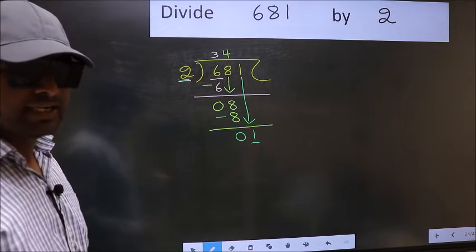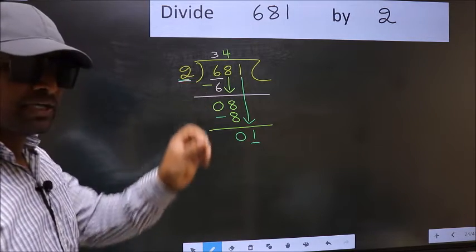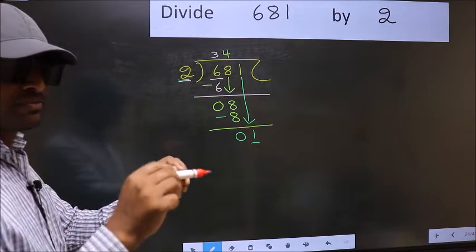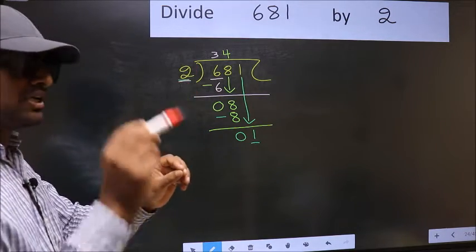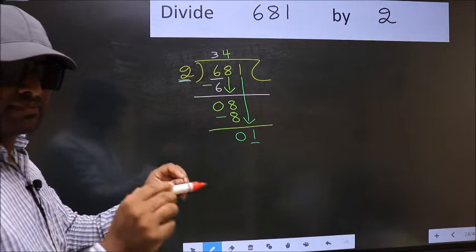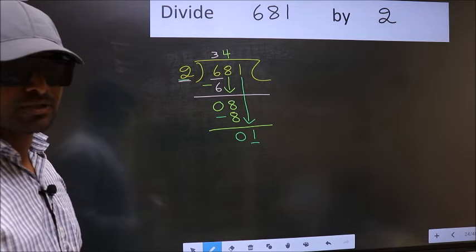I repeat. Bringing the number down and also putting a dot and taking 0. Bringing the number down, putting a dot and taking 0. So, both at the same step, you are not supposed to do.